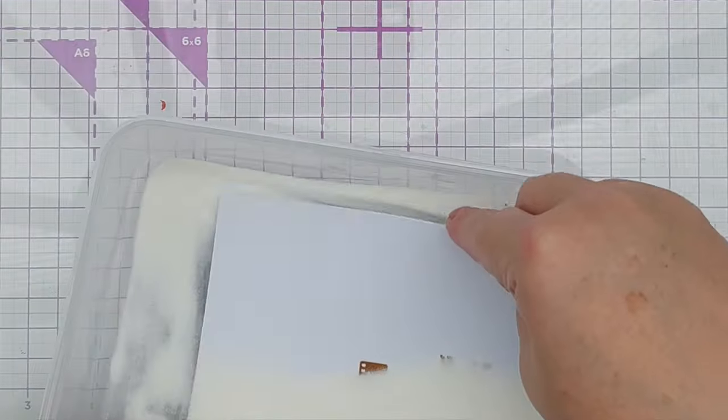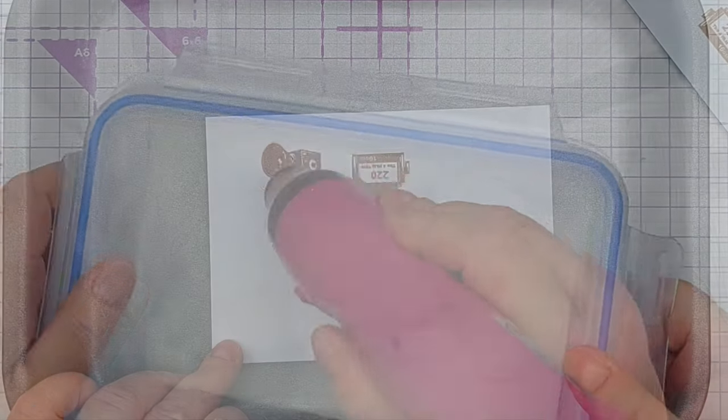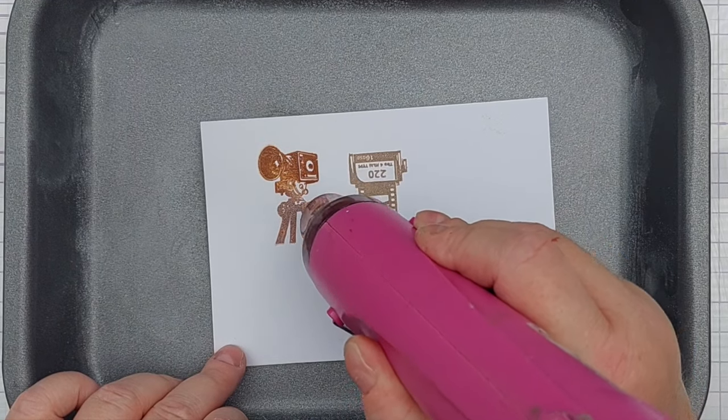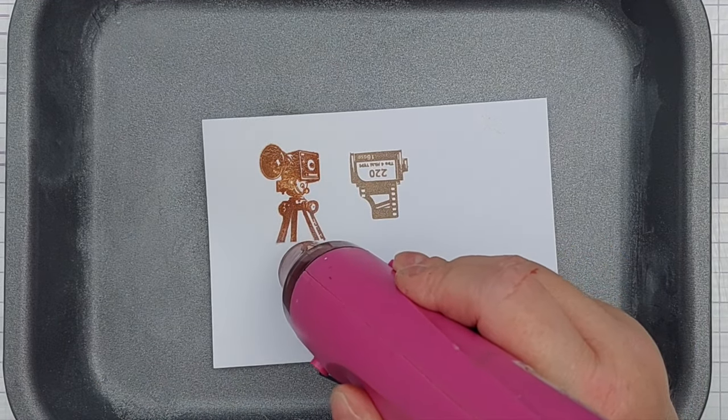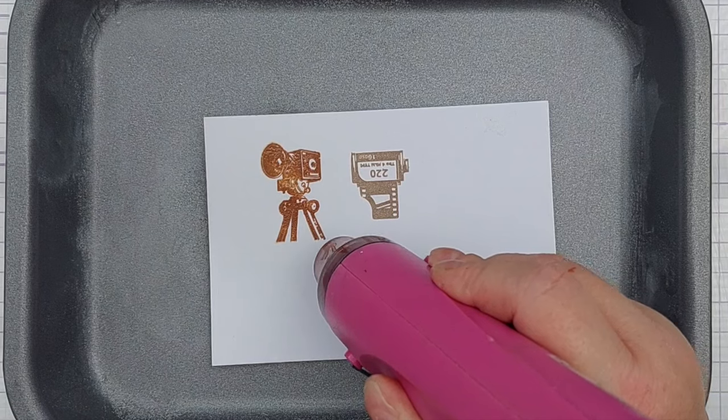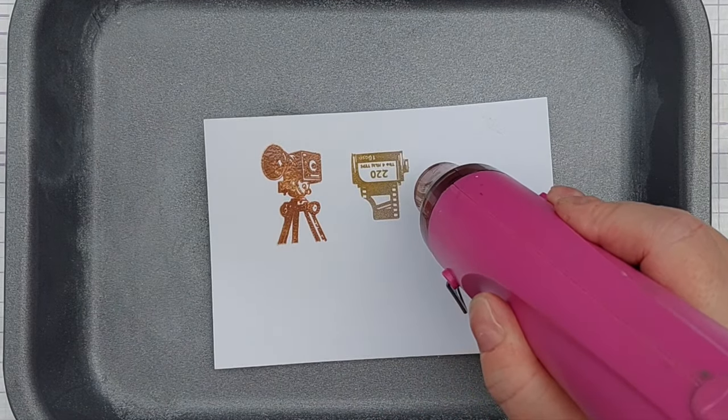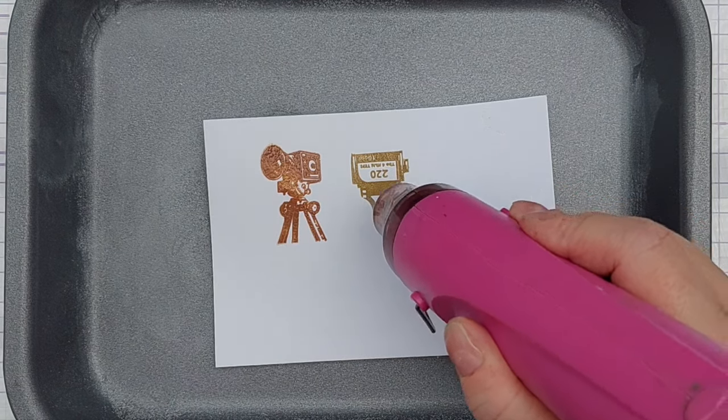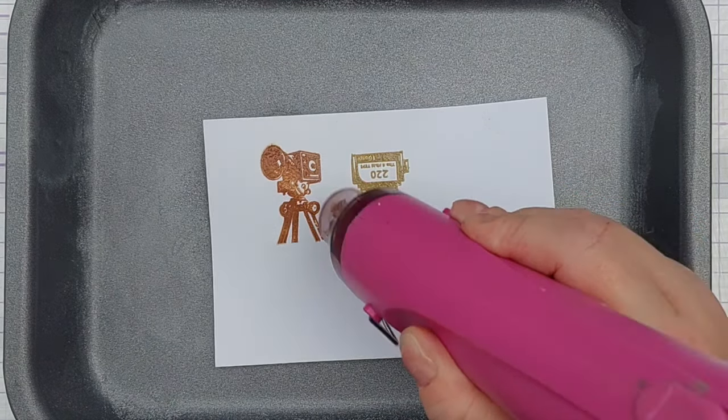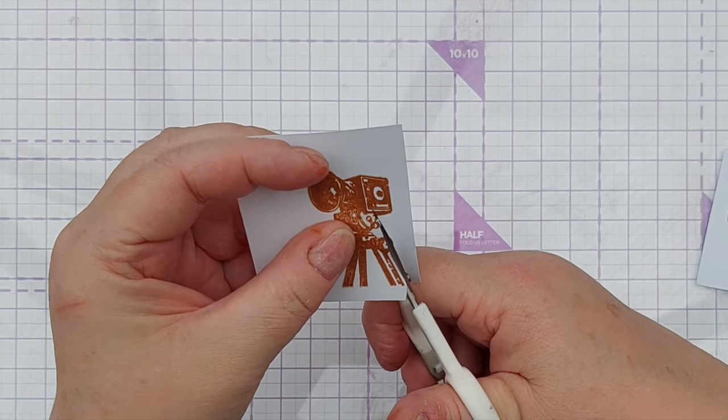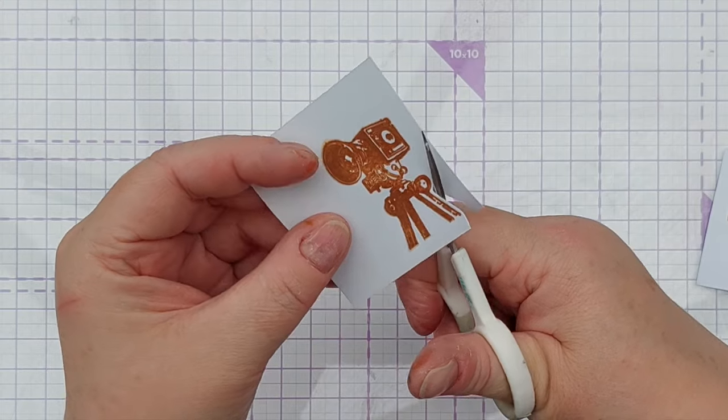Once I stamped them both in archival ink, I stamped them again in Versamark sticky ink and then I dipped them in clear embossing powder and heated them with my heat tool so that they had a slightly dimensional glossy finish. And that just helps them stand out a bit from the mixed media pieces that I created. That subtle difference in texture and shine helps them stand apart. After the embossing powder had set and cooled, I cut them out with my detail scissors.